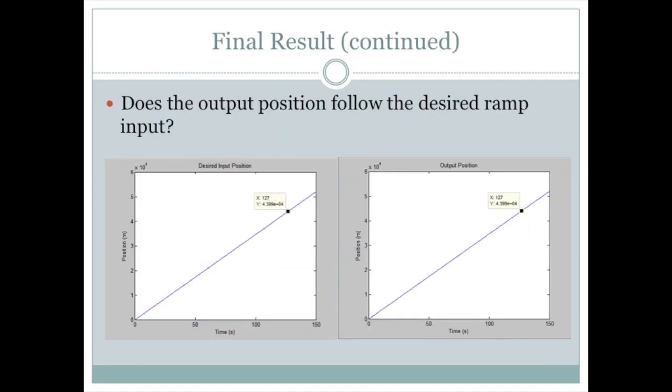Our output position does follow the desired input position. The space shuttle's altitude is 44,000 meters at 127 seconds, which is when the solid rocket boosters disengage. So with that, we end our simulation of the initial launch to when the solid rocket boosters fall off.